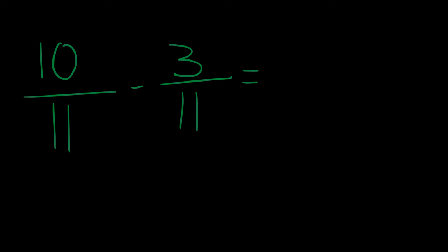Awesome. In case you guessed it, because we have a common denominator of 11, our denominator in our answer will be 11. Now all we have to do is compute 10 minus 3, which is 7. Therefore, the answer will be 7 divided by 11.